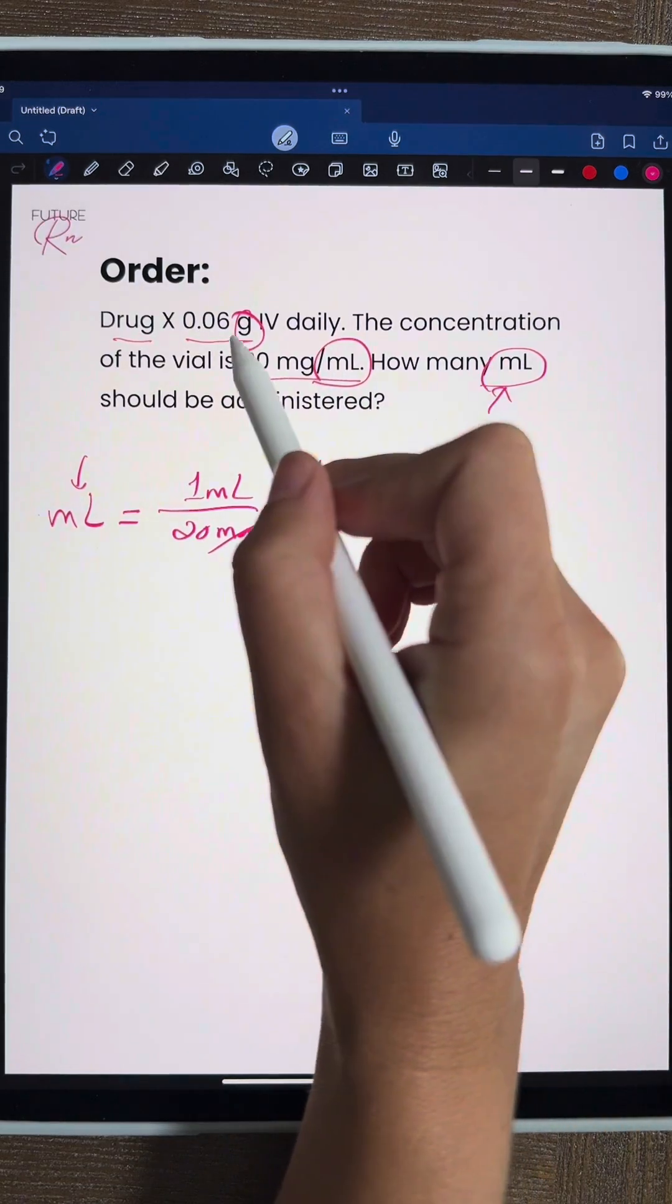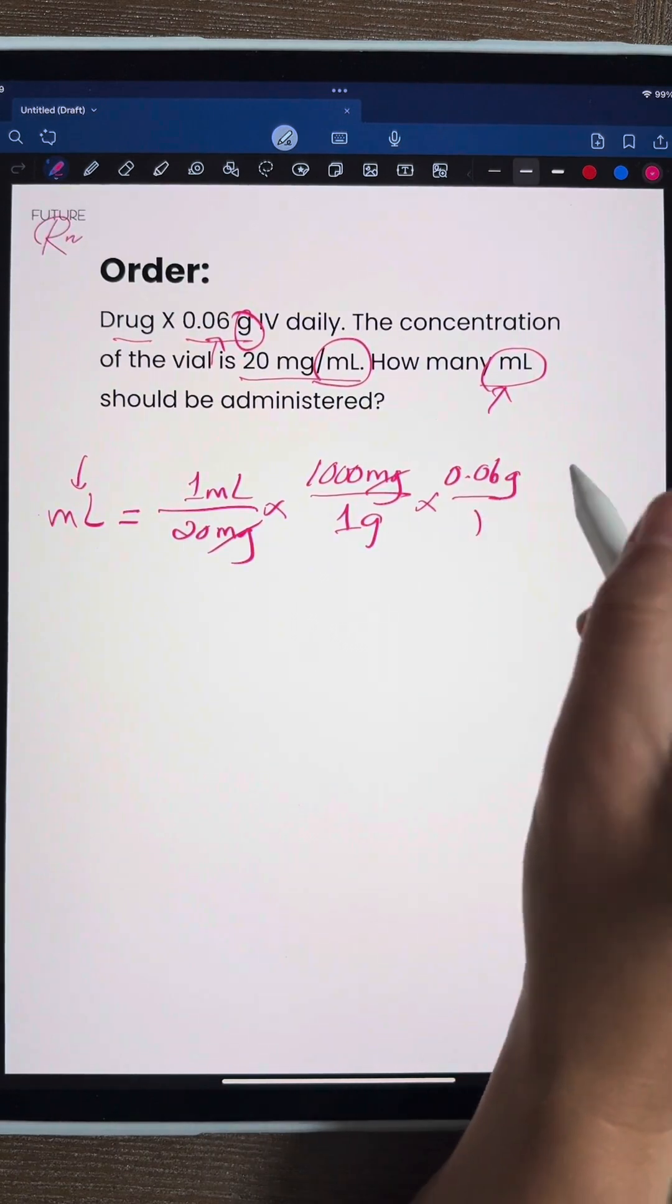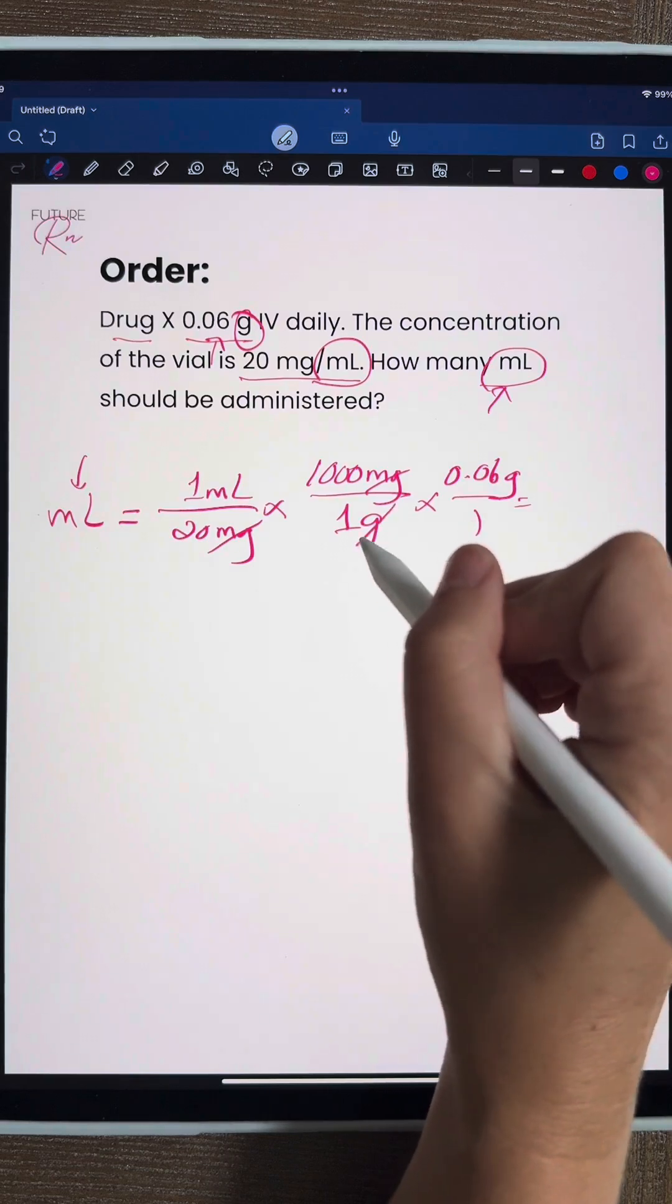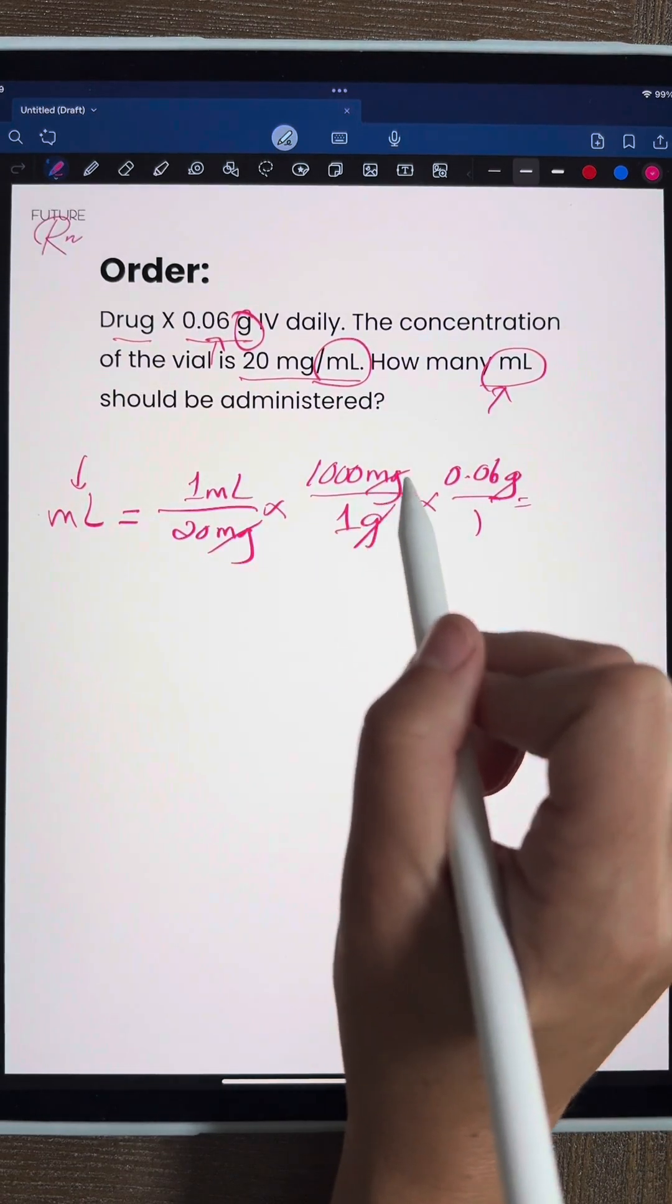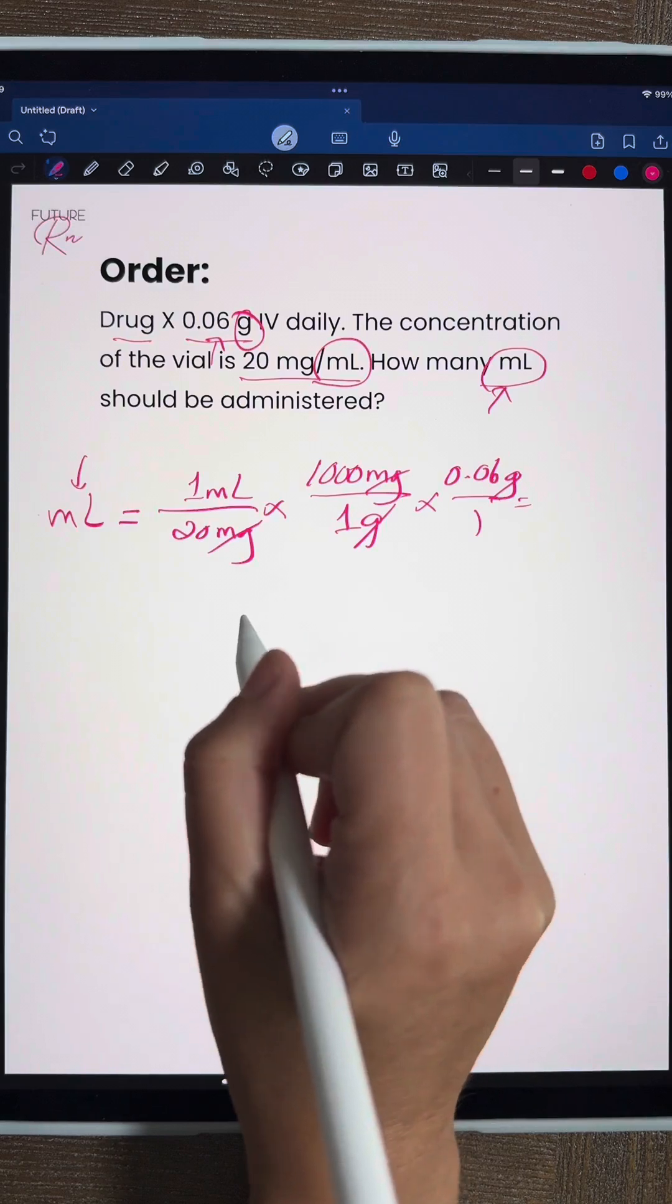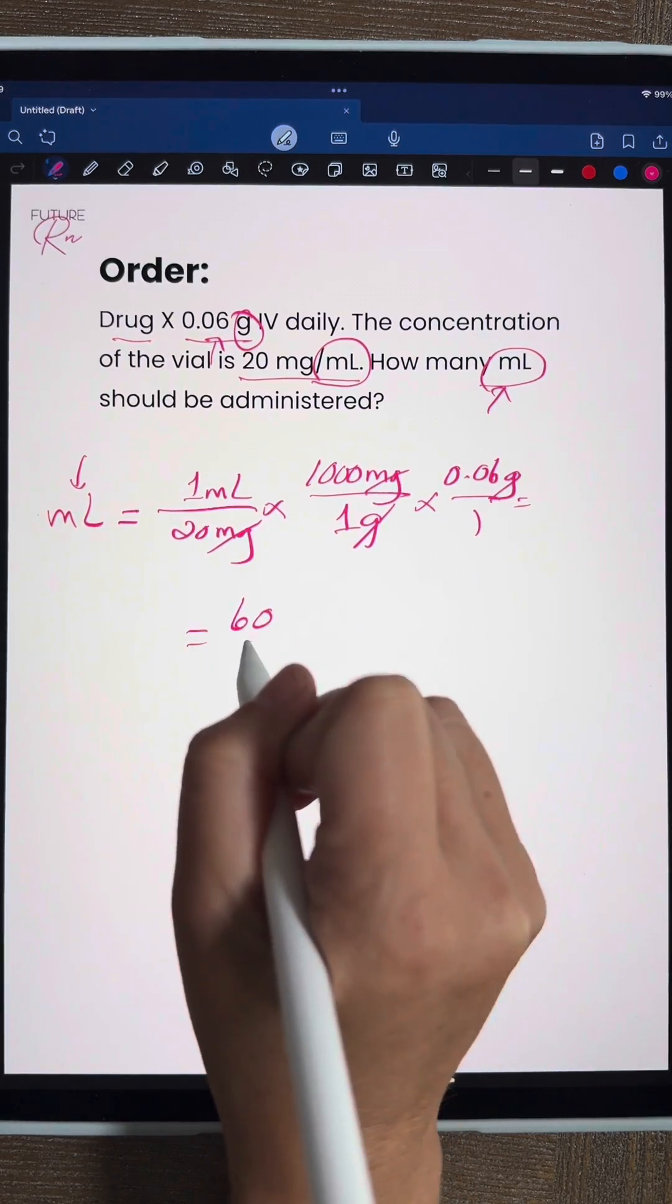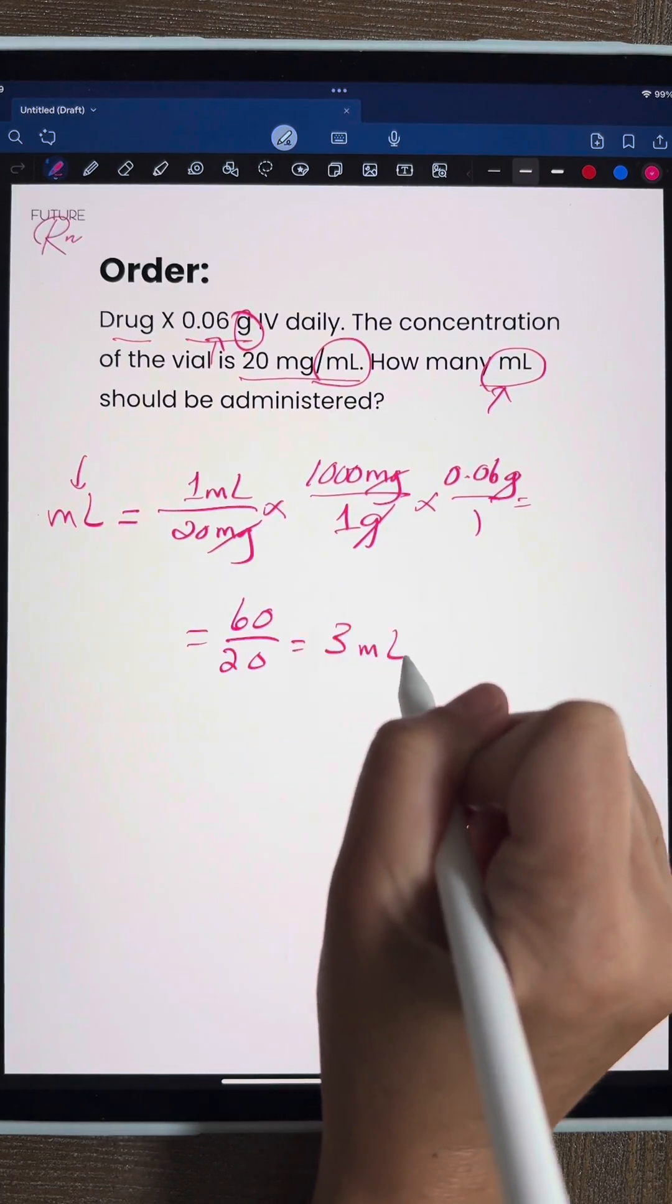So we're going to take our grams from the problem, 0.06 grams. I always put it over 1 because it balances out and then our grams are also going to cross out. So in the end we're going to have 1 times a thousand times 0.06 divided by 20. So once we do all of that math you're going to come out with 60 divided by 20 which is going to give us 3 milliliters.